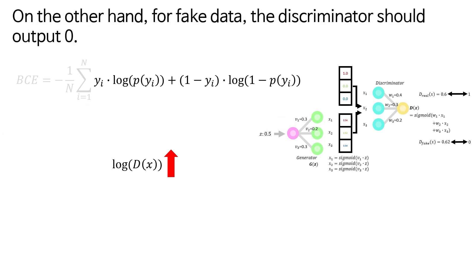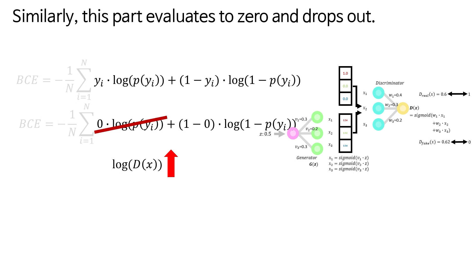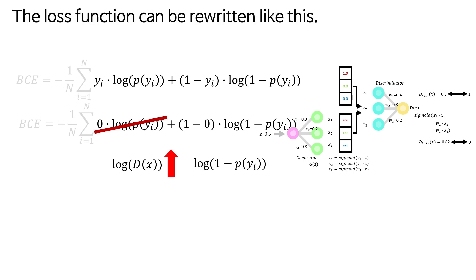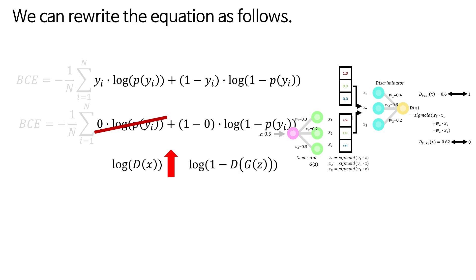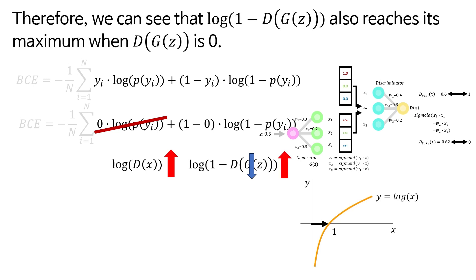On the other hand, for fake data, the discriminator should output 0. The loss function can be rewritten like this. Similarly, this part evaluates to 0 and drops out. The loss function can be rewritten like this. Since fake generated data starts from z, we can rewrite the equation as follows. But since D(G(z)) is the output of the discriminator for fake generated data, it should be close to 0. Therefore, we can see that log(1 - D(G(z))) also reaches its maximum when D(G(z)) is 0.